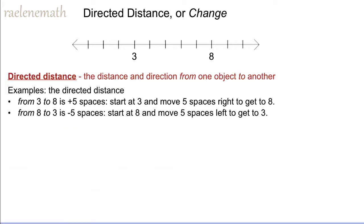By contrast, when we talk about directed distance, it depends on which point or object we begin the measurement from. So in the case of finding a directed distance from three to eight, three is our initial point and we move towards the object located at eight. We still see that there's a distance of five spaces, but there's a direction — five spaces to the right, and we can write that numerically as positive five spaces. So we start at three and we move five spaces right to get to the final position of eight.